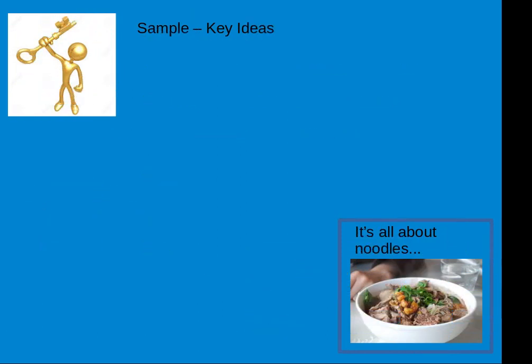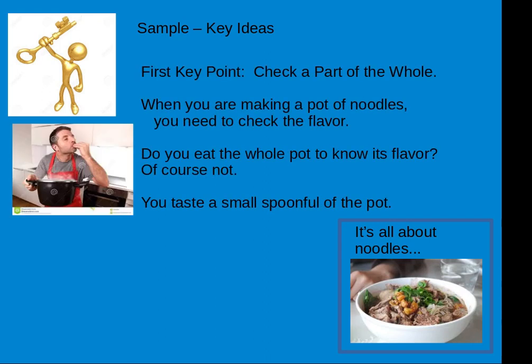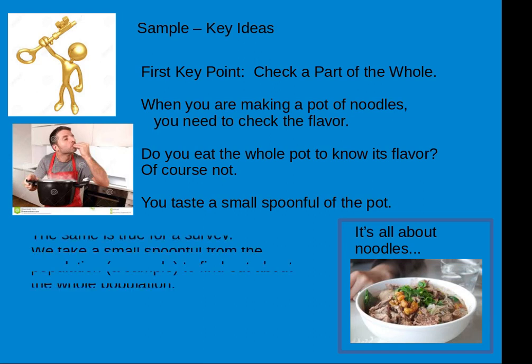Now, there are three sample key ideas we should talk about, and we should think about noodles — like making a pot of noodles — to help us understand. First point: we check a part of the whole. When you're making a pot of noodles, you need to check the flavor. Do you eat the whole pot? No, of course not. You just take a small spoonful and taste it, and that way you know if the whole pot is good or not. This is a sample — one spoonful out of the whole pot.